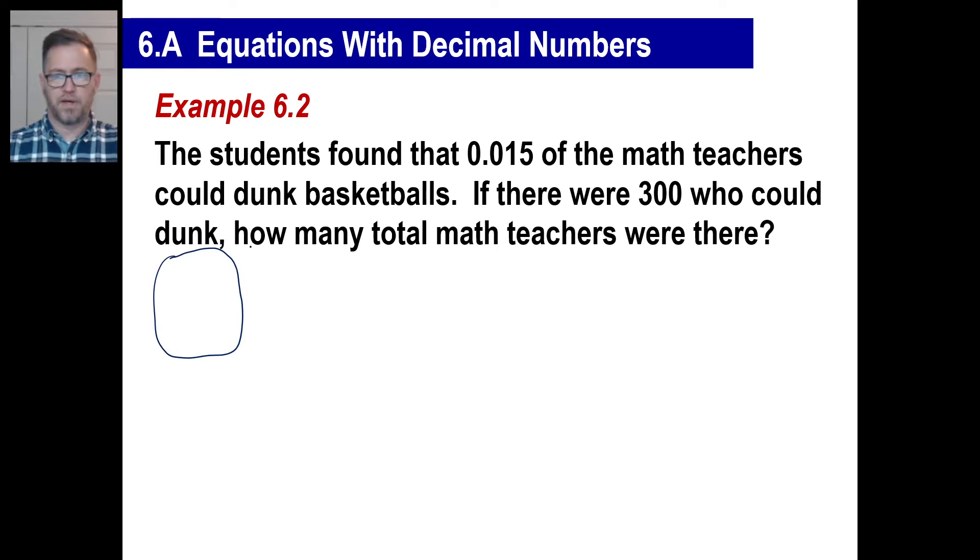There's a 0.015 could dunk basketballs. I know this is more than 0.015, but there's 0.015 that could dunk basketballs, right? Out of the whole thing. 300 could dunk. So that means this number, whatever that is, is 300. How many total were there? In other words, we're looking for this big honking number. We don't know what it is.